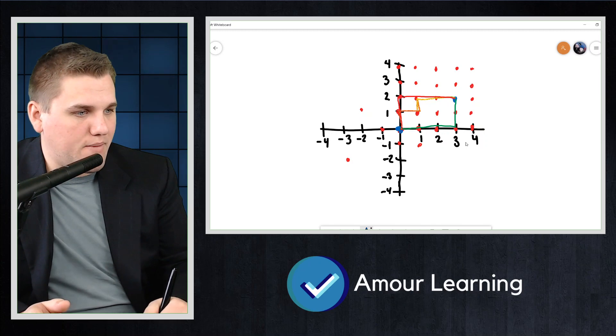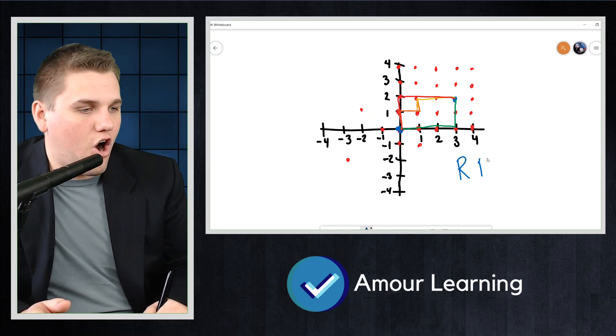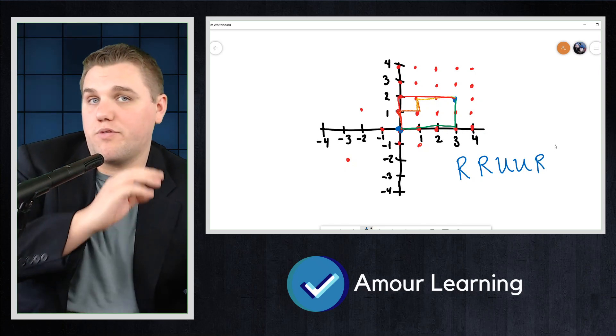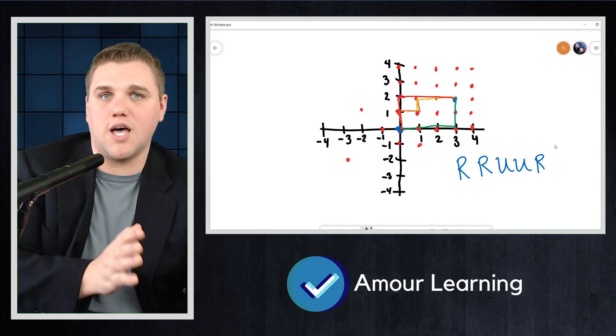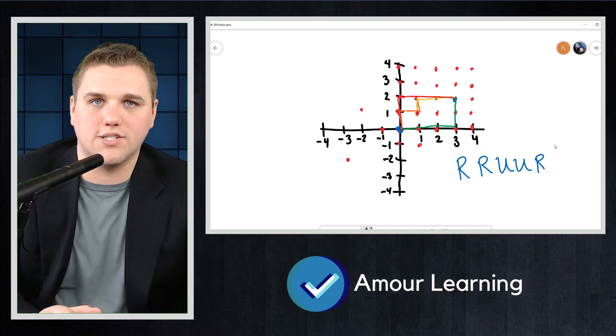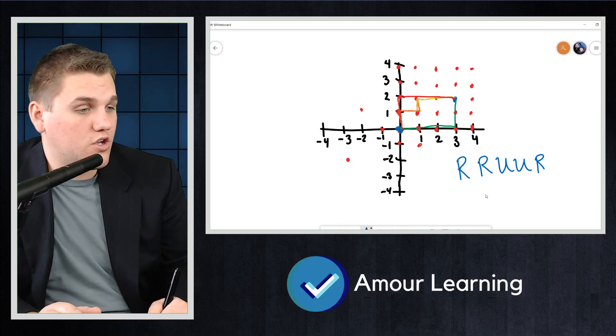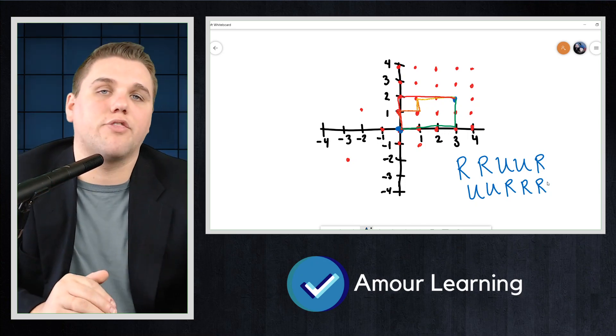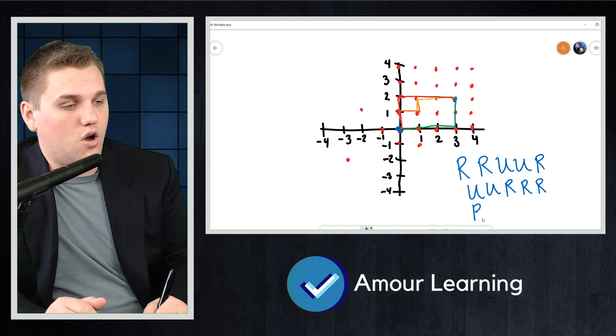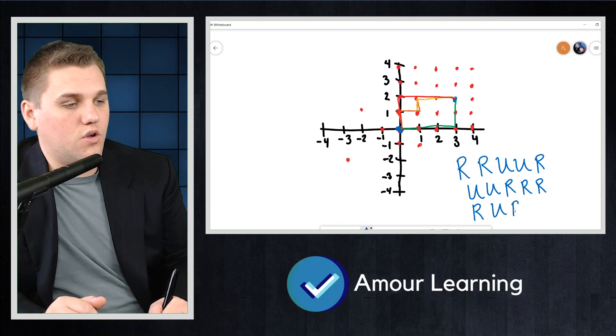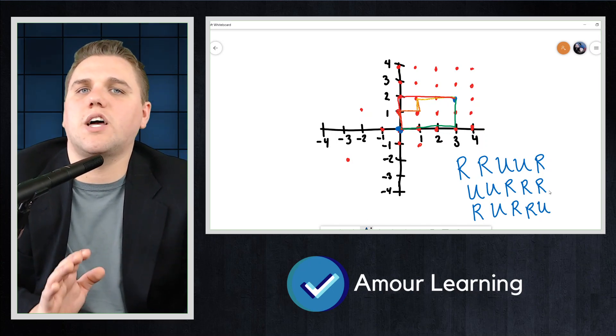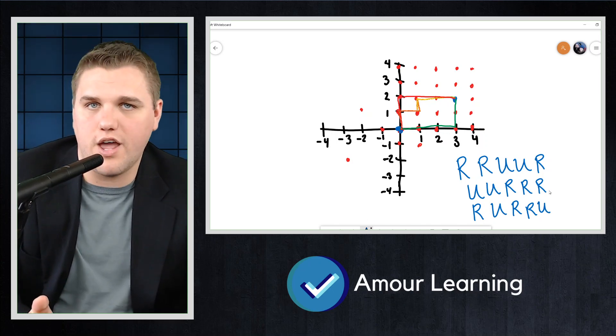So one path, for example, might be R, R, U, U, R. So again, we move three times to the right and two times up. It just depends on how we order this. Or maybe we could do U, U, R, R, R. So we go up two and to the right three. Or we can do R, U, R, R, U. So how many such strings of R's and U's are there?